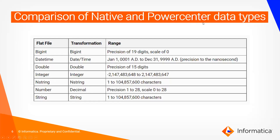The difference between native and PowerCenter data types: native data type is the data type from the imported source - flat file, Oracle, or any database. The corresponding PowerCenter data type is used in transformations or the source qualifier. For example, flat file's bigint maps to bigint (19,0 precision), datetime stays as datetime, double stays as double, and number maps to decimal in PowerCenter.